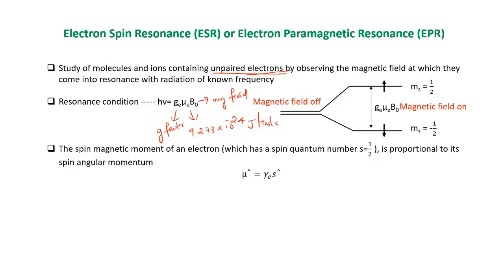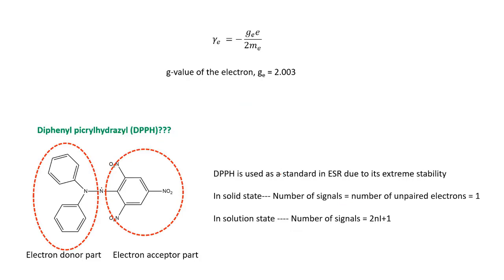The spin magnetic moment of an electron which has spin quantum number s=1/2 is proportional to its spin angular momentum. We can write it as μ̂ = γE·Ŝ, where Ŝ is the spin angular momentum operator and γE is the magnetogyric ratio. This γE = -g·e/(2me), where g is the G factor, e is the charge of electron, and me is the mass of electron.